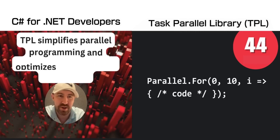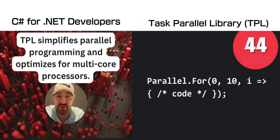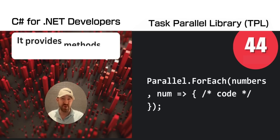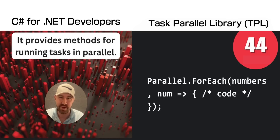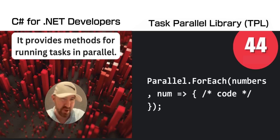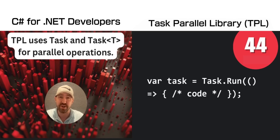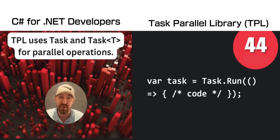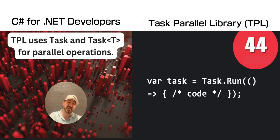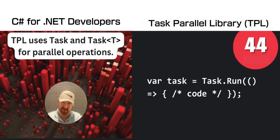The Task Parallel Library simplifies parallel programming and uses all the cores on your machine in the most efficient way possible. Instead of trying to do threading and locking by yourself, you should use the Task Parallel Library for running tasks in parallel. It uses Task and Task of T, which you'll be using anyway for asynchronous methods.